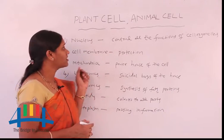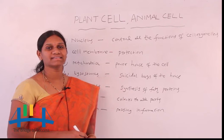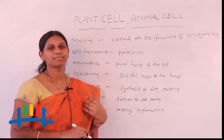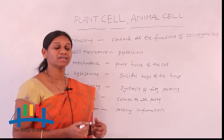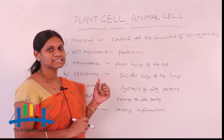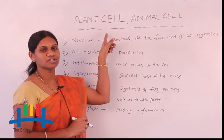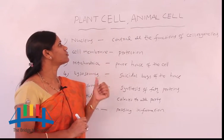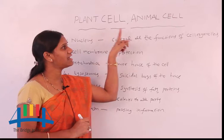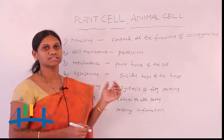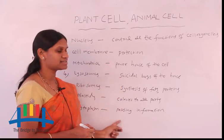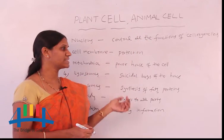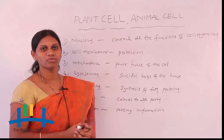Hi friends, today we are going to discuss about the plant cell and animal cell. Before that, first the introduction: every organism is made up of cells. That is the basic structural and functional unit of any organism. Now here we are going to discuss the plant cell and animal cell — the differences, which cell organelles are present, their functions, and their structure.